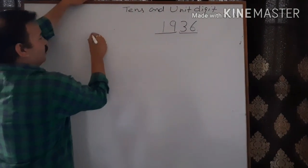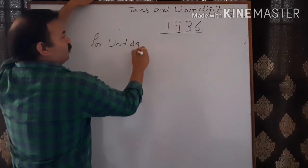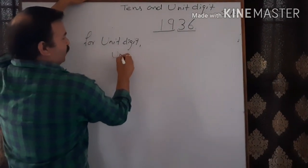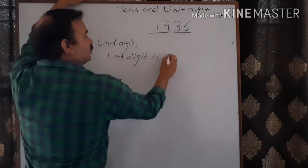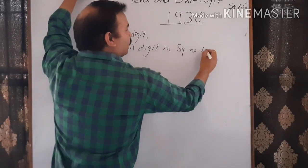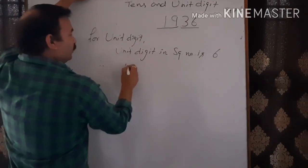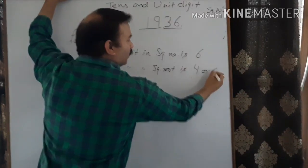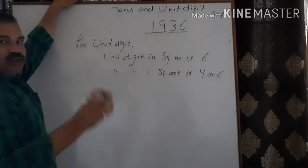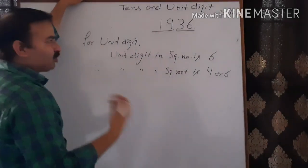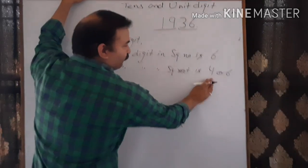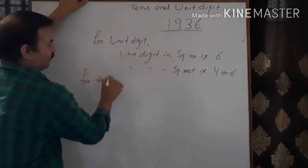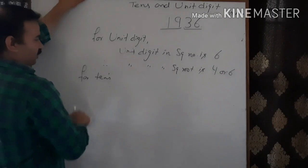Now for the unit digit: the unit digit in the square number 1936 is 6. Therefore, the unit digit in the square root is either 4 or 6. You can't be sure unless it is a small number whose square you remember. So we are not sure whether 4 or 6 will appear as the unit digit of the square root.